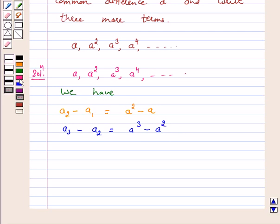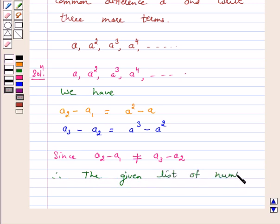Here, since A2 minus A1 is not equal to A3 minus A2, therefore, the given list of numbers does not form an AP.